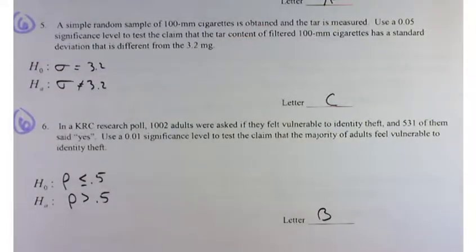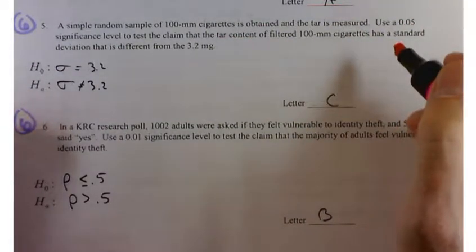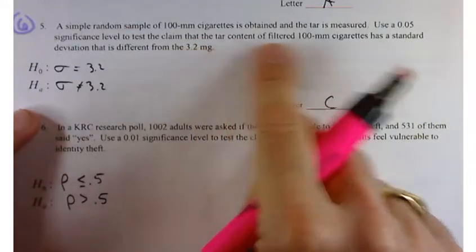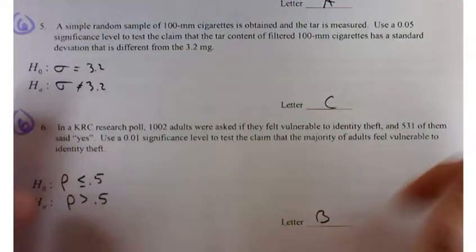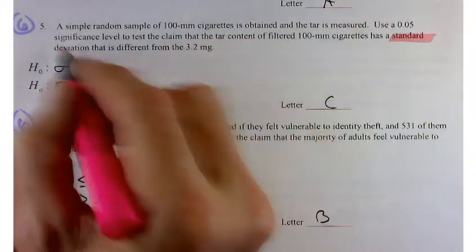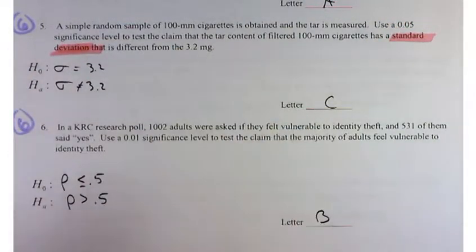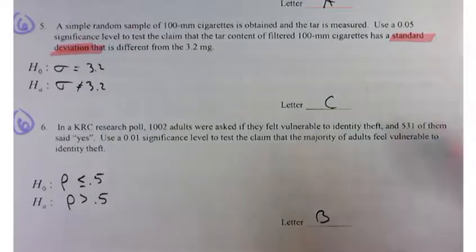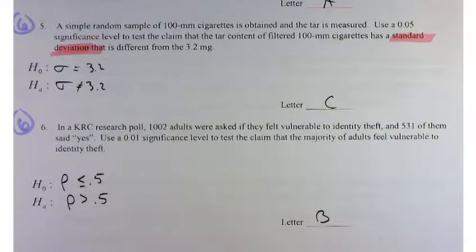Down to problem number five. Pretty much says it all here. You're testing the claim that the tar content of filtered 100 mm cigarettes has a standard deviation. So it's right there, and it's one population. That's pretty straightforward. One population standard deviation or variance.